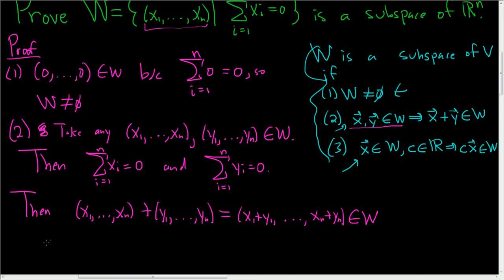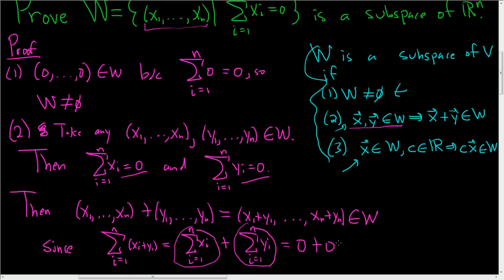Well, this will be in W since, let's go ahead and verify it here. Let's see. It should work. If not, we're in trouble. So this is sum from i=1 to n of (x_i + y_i). We're adding up all the components. And you can break the sum up as the sum from 1 to n of x_i plus the sum from 1 to n of y_i. And the first sum here, this is zero, right? So this is zero. And this sum here, it's also zero. So zero plus zero equals zero. So that vector is indeed in W, and so W is closed under vector addition, right?